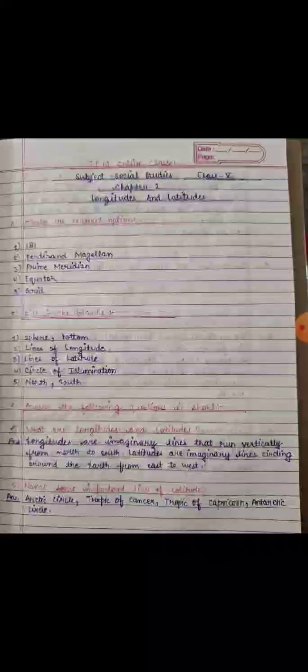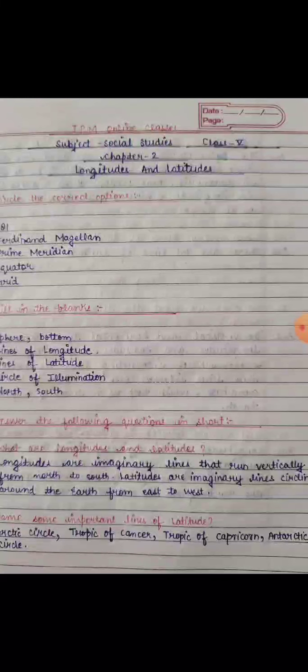Our first question is: what are longitudes and latitudes? Longitudes are imaginary lines that run vertically from north to south, from the north pole to the south pole. Latitudes are imaginary lines circling around the earth from east to west.